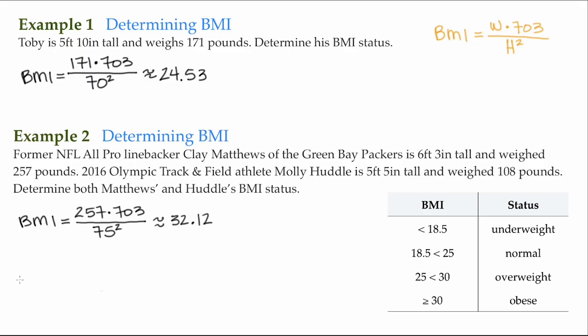For Molly Huddle, same idea. Her weight is 108 pounds times 703 from the formula, divided by her height, which is 5 feet 5 inches. 5 times 12 is 60, plus 5 more inches equals 65 inches, and then we square it. Her BMI is approximately 17.97.